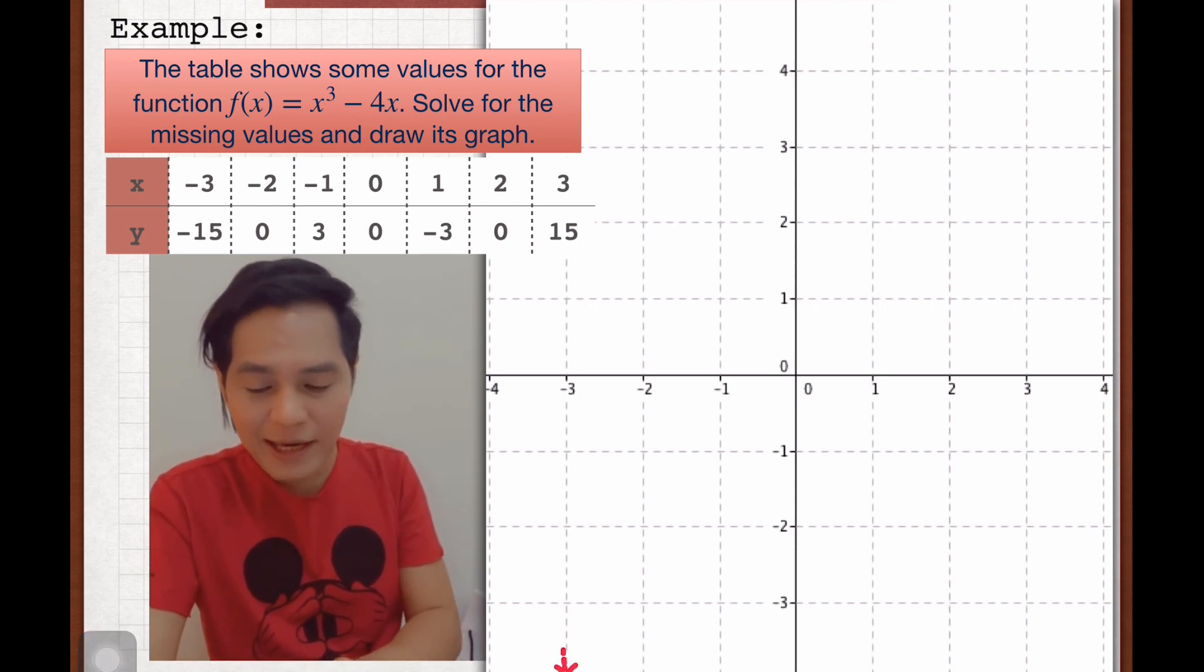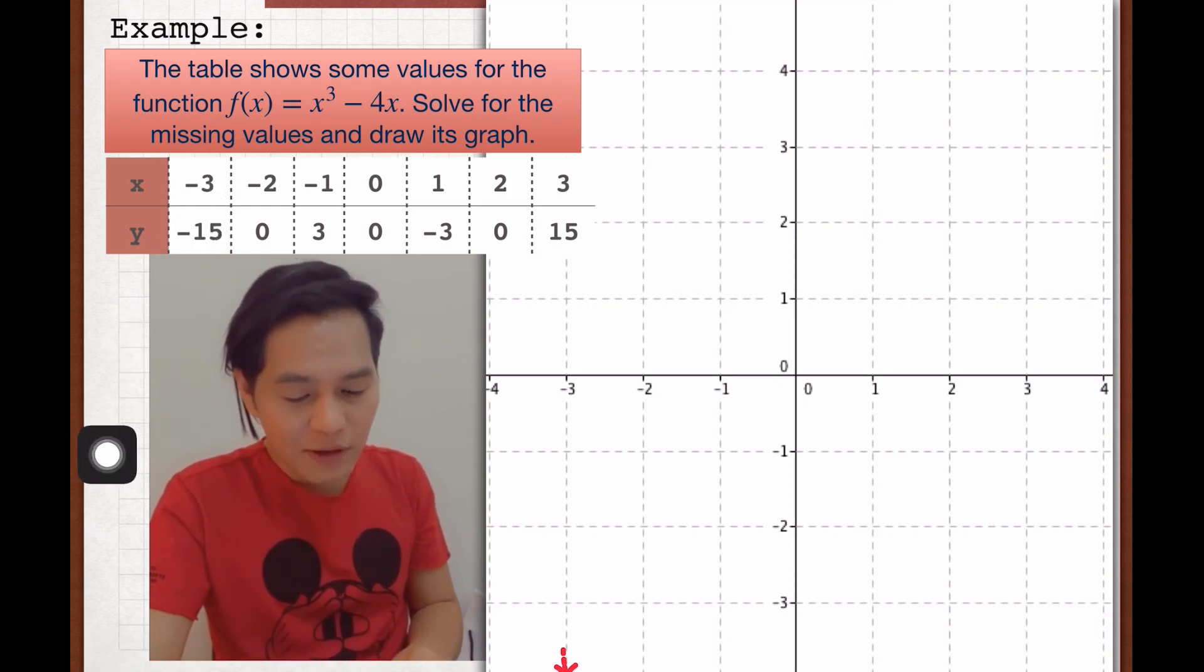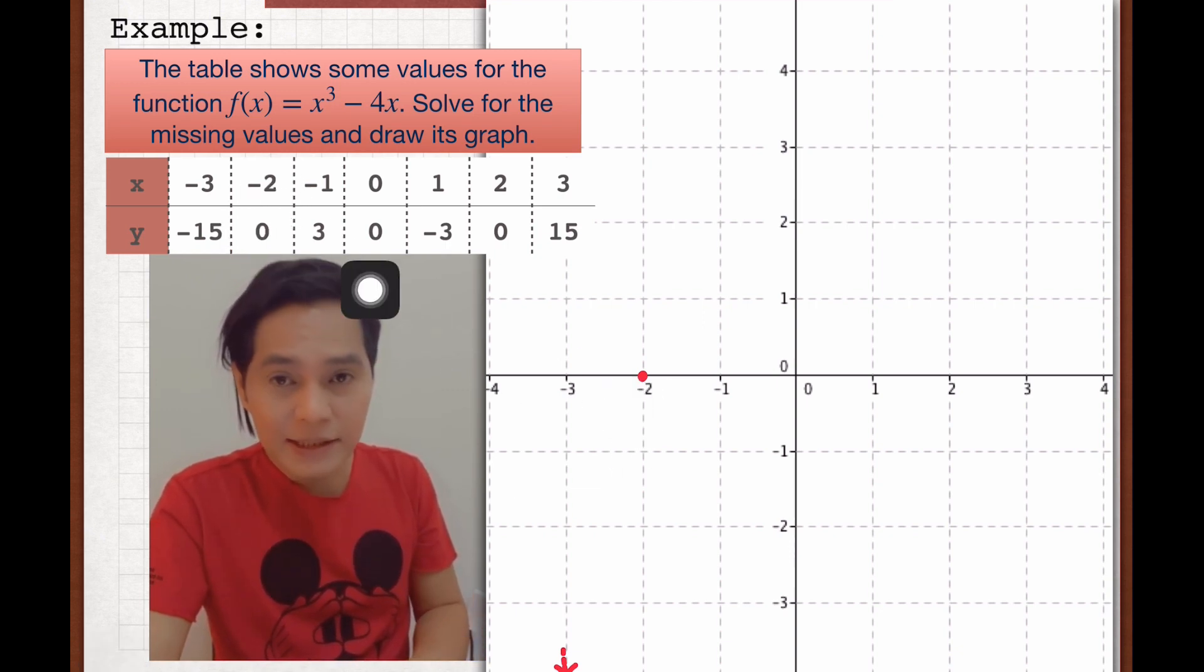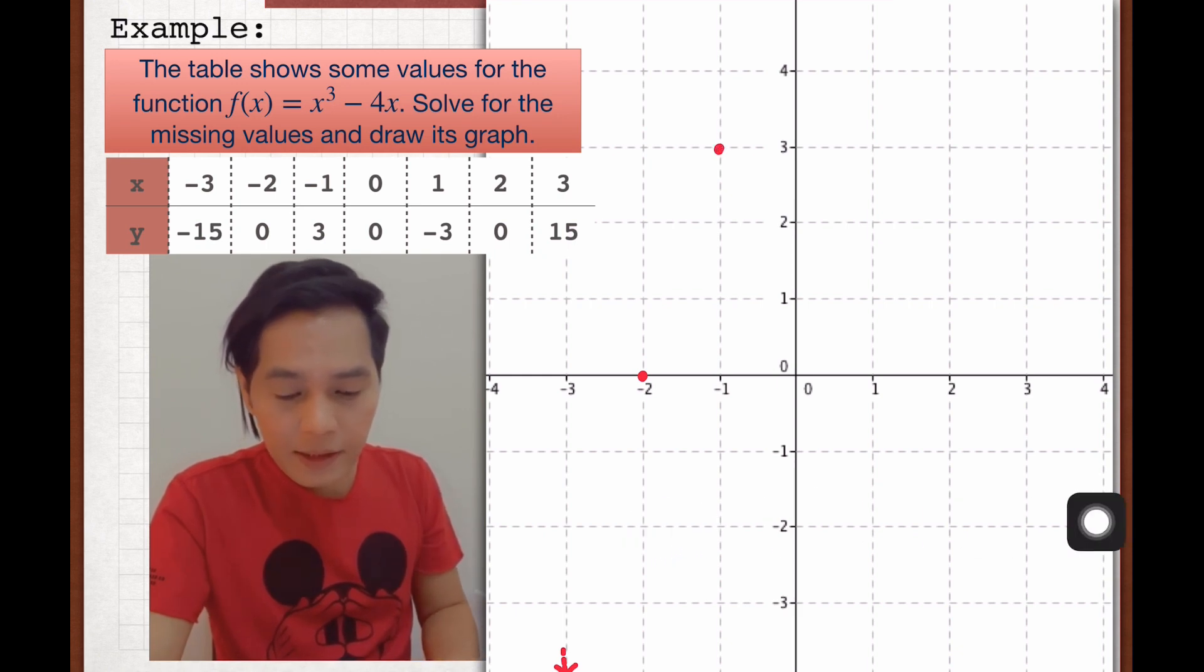So we cannot figure out -15 here, so I'm just putting an arrow here, meaning it's going down below. Next one is -2, 0. So it's here. Now it's in the negative x-axis. And then -1 and 3 there in the second quadrant.